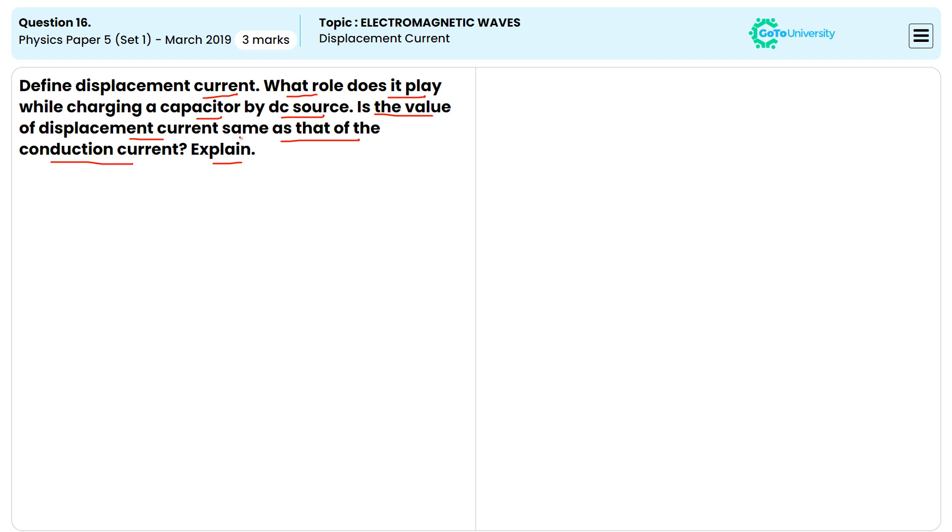Let me see the first definition of the displacement current. Displacement current is the current due to the changing of electric flux. It provides continuity of current in circuits containing capacitor.